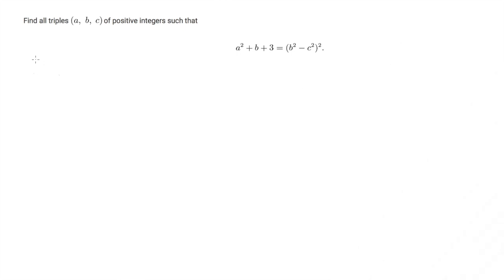So let me apply the same trick when b is larger than c. In this case, we have b² - c² is larger than 2b - 1.